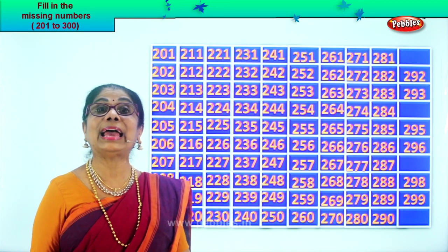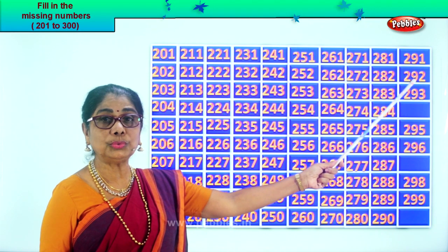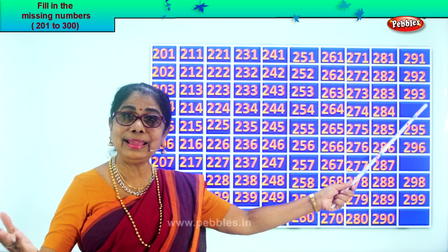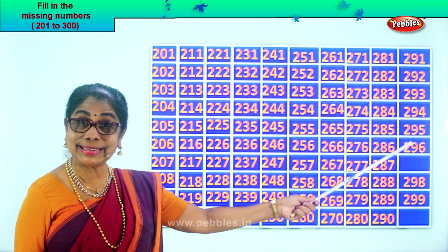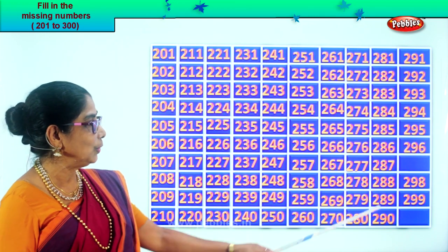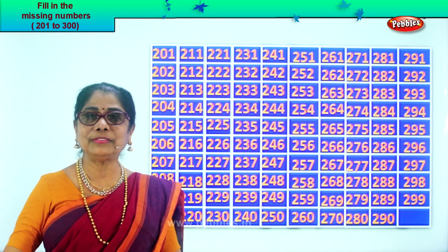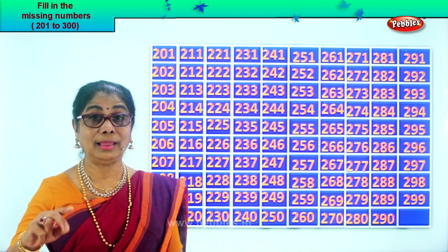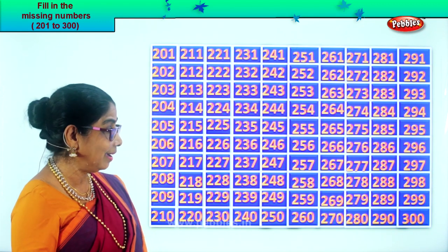After 90, 91. So we write 291. 292, 293. After 3, 4. After 93, 94. 294, 295, 296. After 6, 7. After 96, 97. 297, 298, 299. After 99, be 100. But here 299, and one more: 300. What do you get here? 300. Let's read: 291, 292, 293, 294, 295, 296, 297, 298, 299, 300.